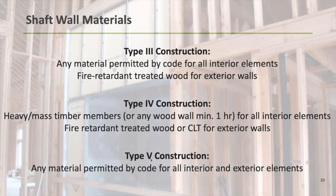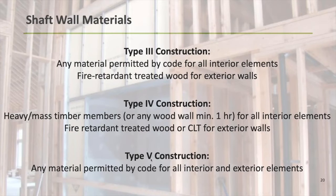For Type 4 exterior walls, similar to Type 3, you can do fire-retardant-treated wood or non-combustible materials, or you also have the added option of using cross-laminated timber as exterior walls. Type 5 construction allows all elements — both interior elements and exterior walls — to be any material permitted by code, including any type of wood framing. So to summarize: regardless of whether we're Type 3, 4, or 5, and regardless of whether our shaft wall is an interior or exterior shaft wall, we can frame the entire building with wood, including the shaft walls themselves.